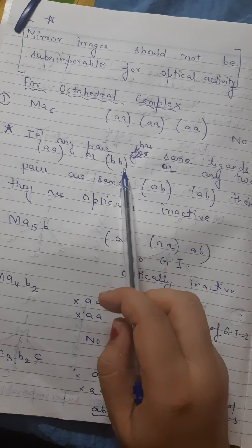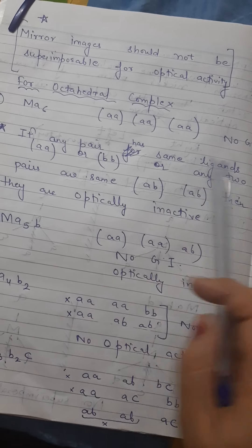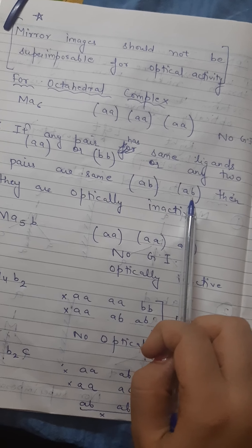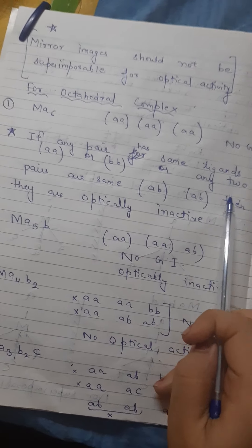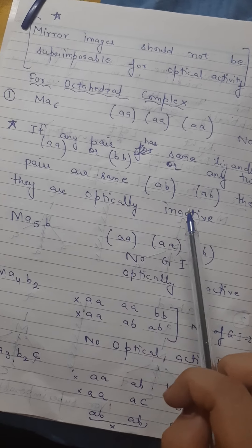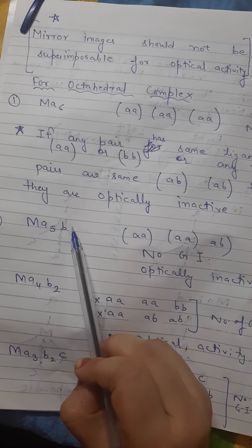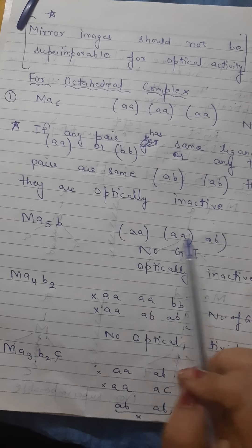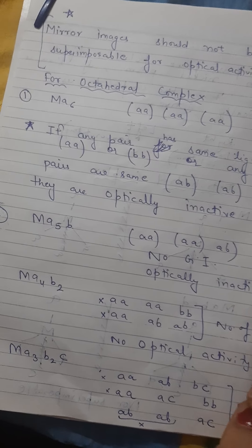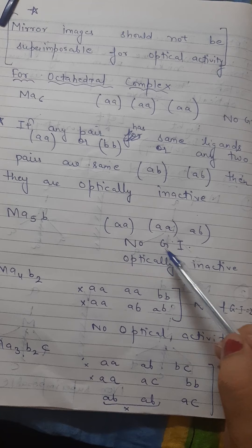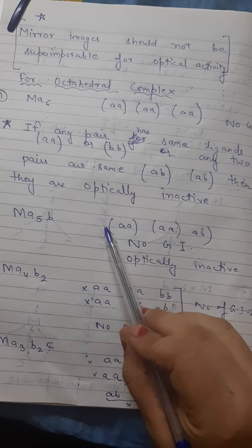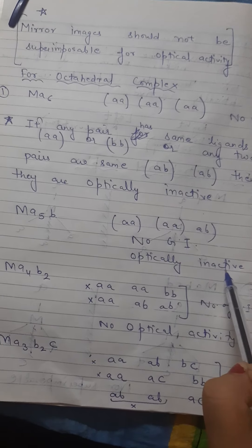Then the compound is optically inactive. Now example: MA5B - AAAAB, these combinations. No geometrical isomer, same ligand, optically inactive.